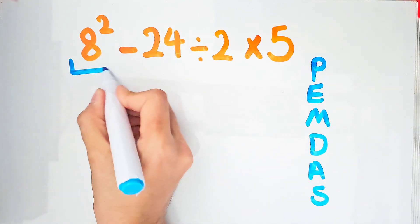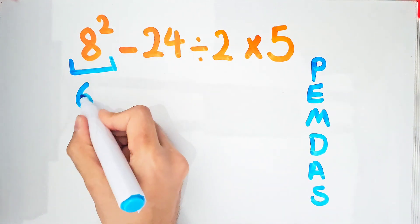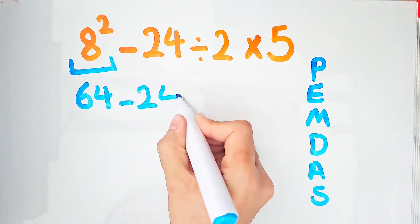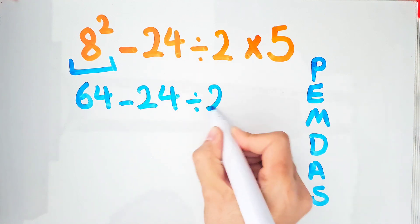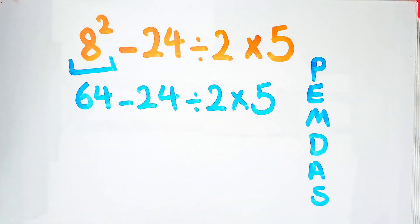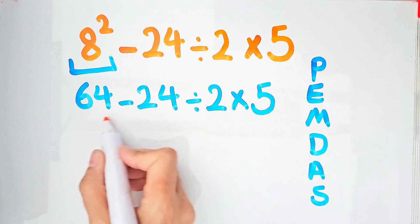8 to the power of 2 equals 64. Now we have a new expression: 64 minus 24 divided by 2 times 5. Now we have subtraction, division and multiplication. Because the division and multiplication have the higher priority than subtraction, first we do division, after that multiplication.